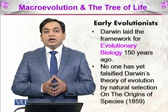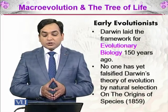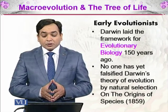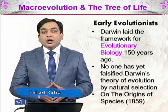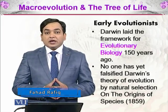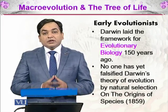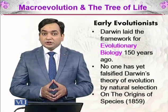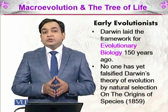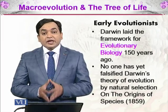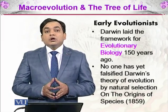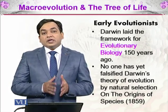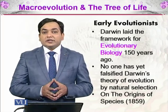One of the earlier scientists, Darwin, was the first scientist who laid the framework for evolutionary biology 150 years ago. His ideas were so elaborate and concise at that time that even today, no one has yet falsified Darwin's theory of evolution by natural selection. He wrote about this in his book On the Origin of Species in 1859, and he was so prominent that he influenced the work of other scientists of his time.